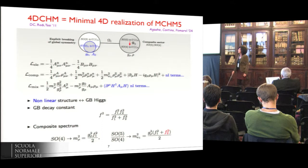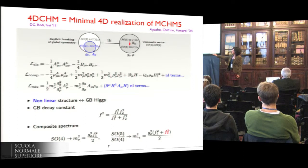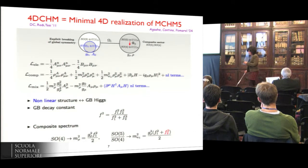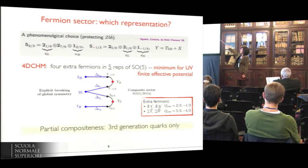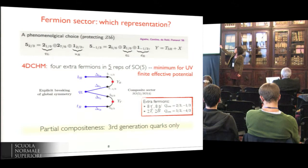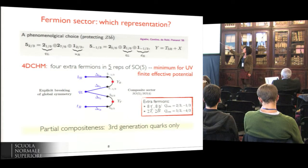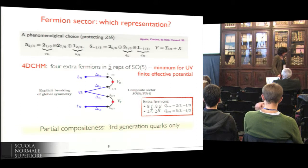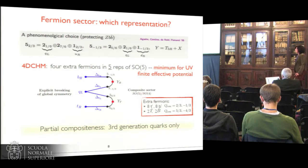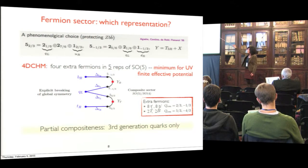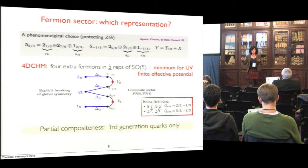The model I will use to describe the composite Higgs phenomenology is the four-dimensional composite Higgs model. F is the Goldstone boson decay constant. The composite spectrum describes spin-1 resonances of SO(4) and also the axial-vector resonances of the coset group. Concerning the fermion sector, we choose to put the extra fermions in the fundamental representation of SO(5), allowing the minimum number of fermions which ensure a finite effective potential, so this scheme is the minimal scheme to calculate the Higgs mass, vacuum expectation value, and all related ingredients.